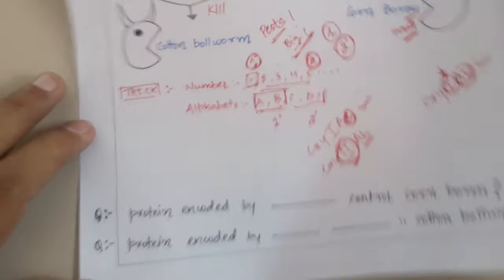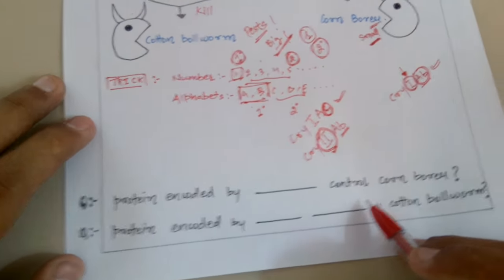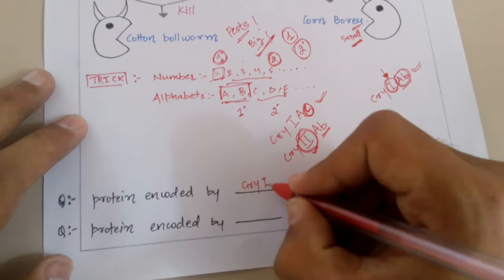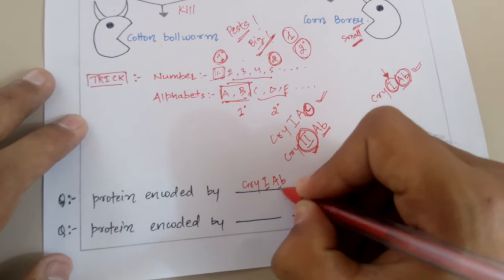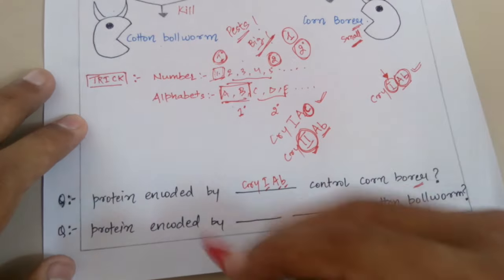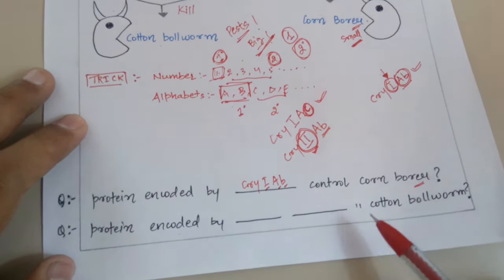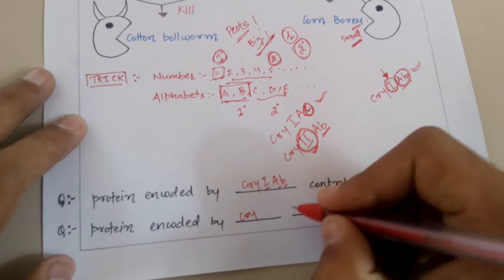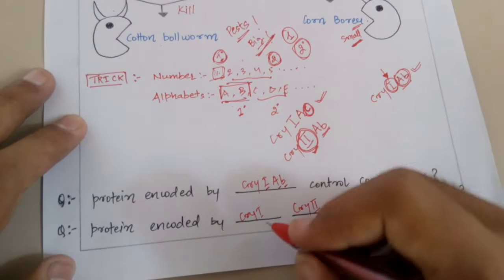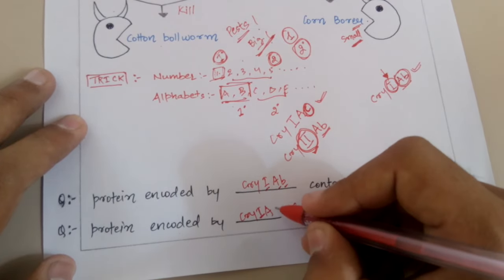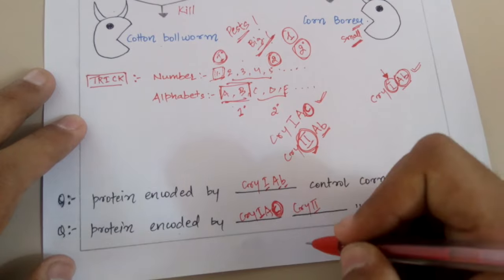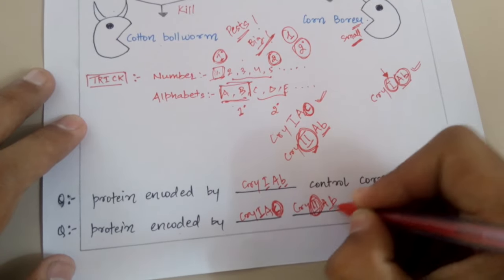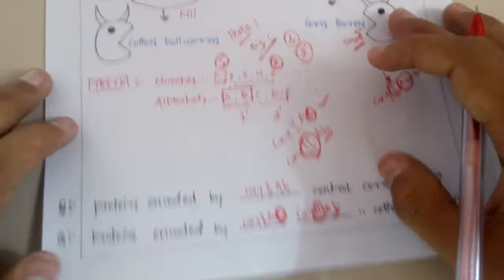Let's do some practice questions. Proteins encoded by which gene control corn borer? Since corn borer is a small name, all letters are primary — so the gene is cry1AB, where 1, A, and B are all primary. Which genes control cotton bollworm? Since cotton bollworm is a large name, we need at least one secondary element — giving cry1AC and cry2AB.